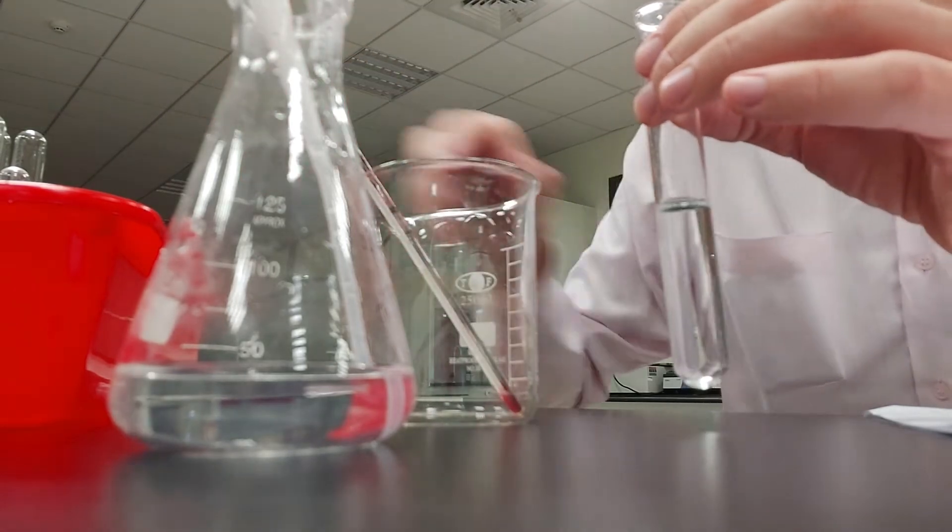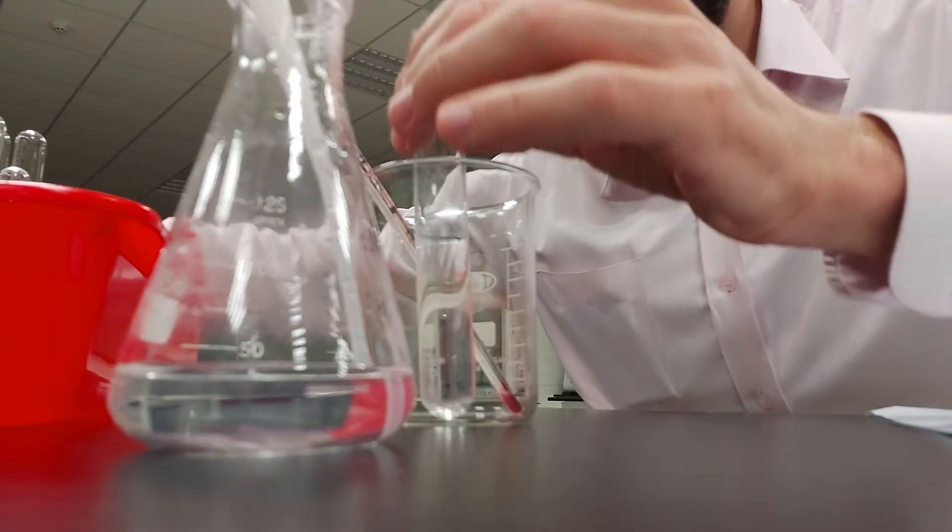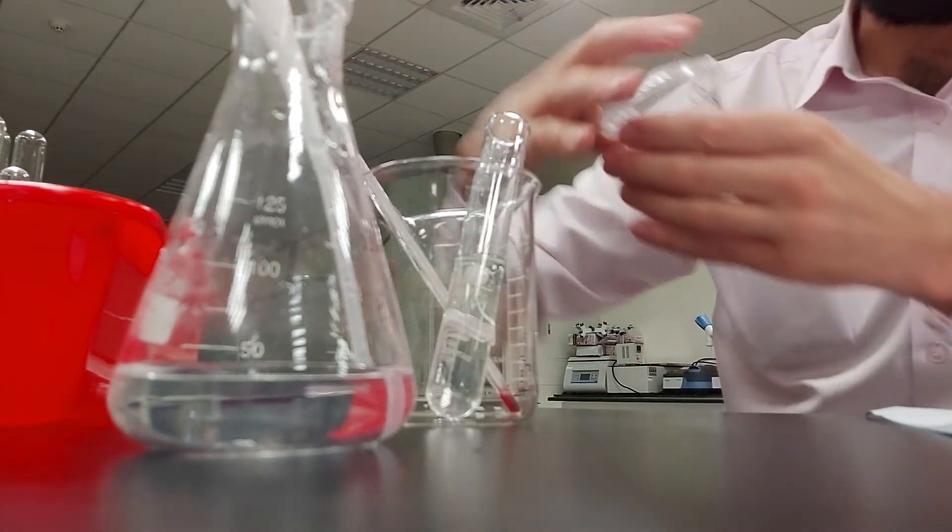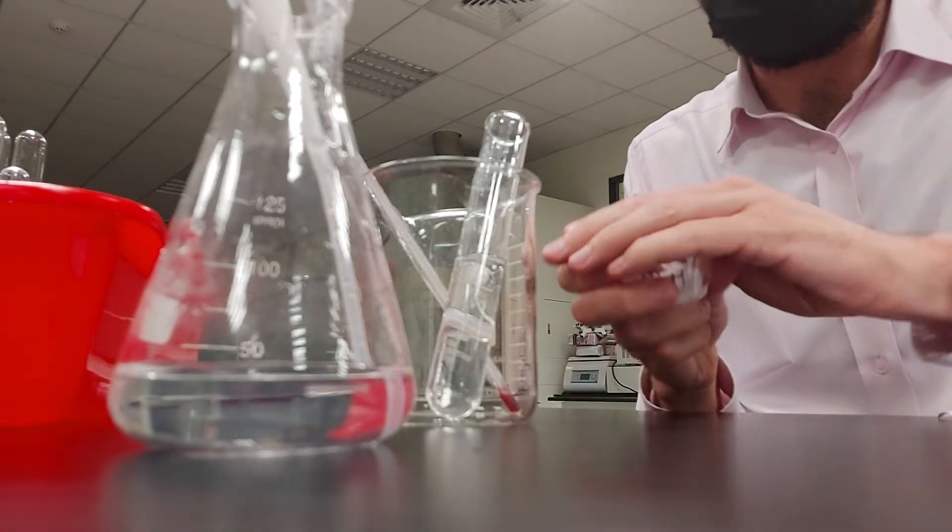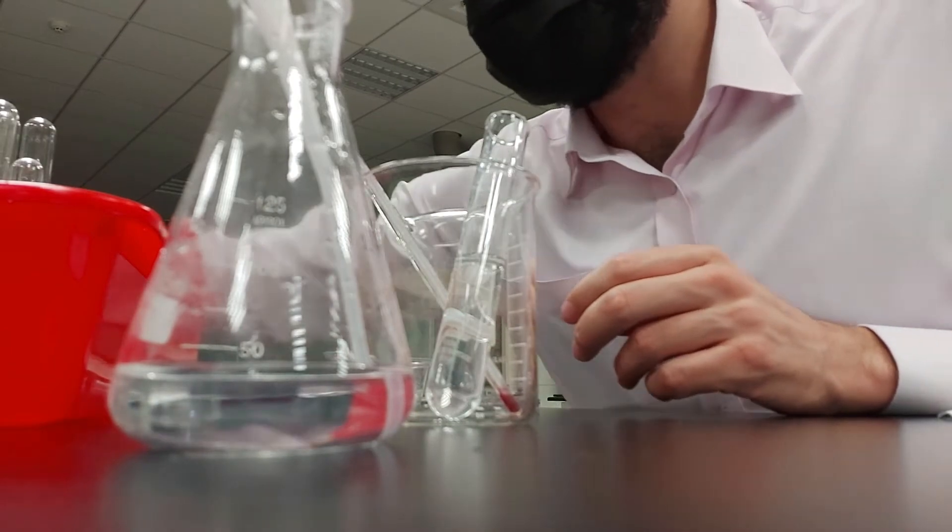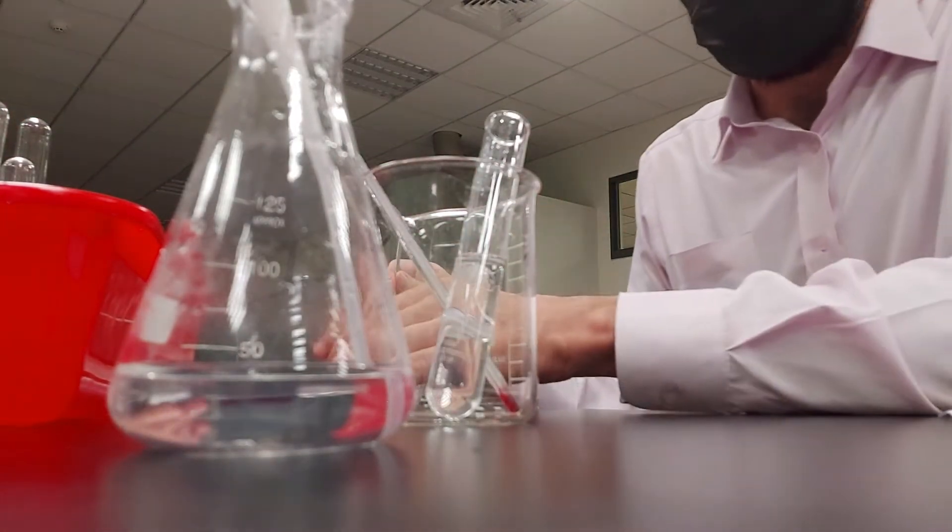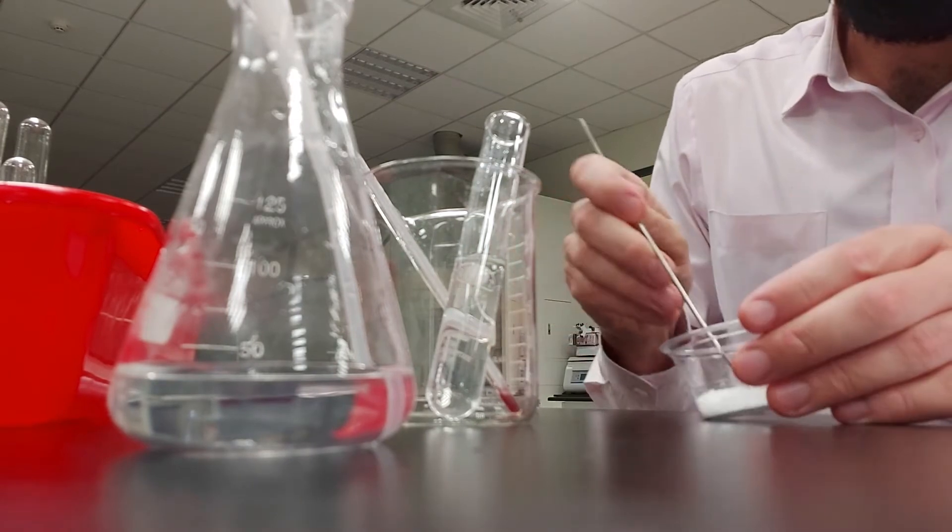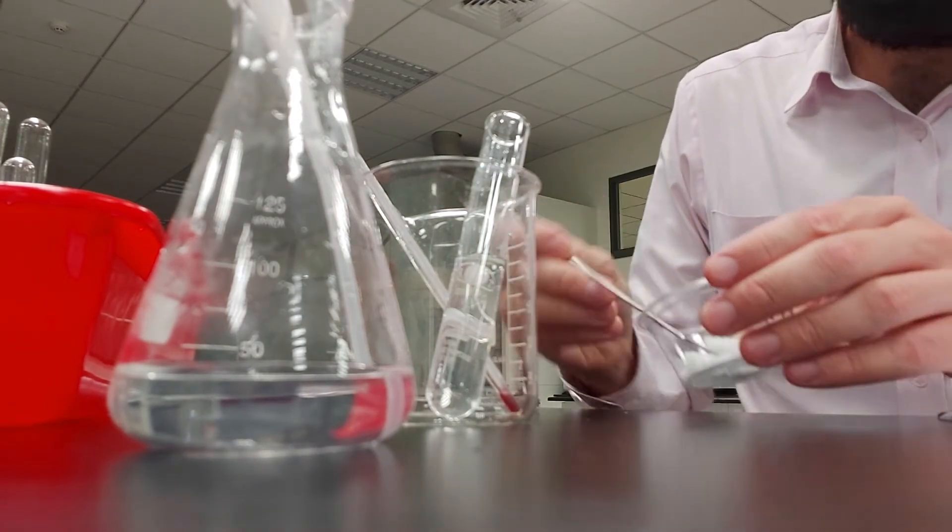So we'll put this thermometer there for a second. And so I'm going to add this. This is magnesium sulfate. I'm going to add some of this to the acid and we'll see what happens to the temperature once it's been added.